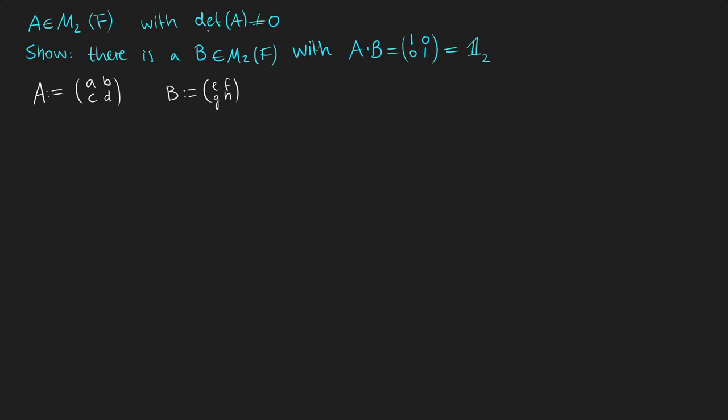Well, we know that the determinant of A is not equal to 0, which means nothing other than A times D minus B times C is not equal to 0. Because if we want to calculate the determinant of a 2x2 matrix, we just need to multiply the diagonal entries and then subtract them from each other.